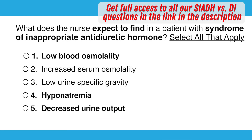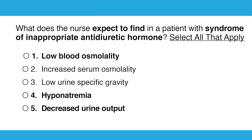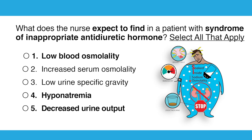What does the nurse expect to find in a patient with syndrome of inappropriate antidiuretic hormone? Select all that apply. Before we even look at the options, look at SIADH. I recommend always drawing out the little figure — the little fat dude. Remember, we stopped urinating, so we have low urine output with very sticky, thick urine and high specific gravity. Also if you drew out your little fat dude, we have soaked on the inside — SI — low liquidy labs. So sodium is going to be low and we're going to have seizures.